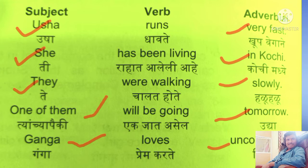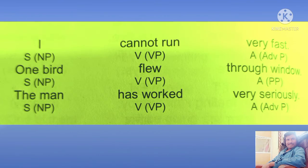Adverbial is the part of the sentence that gives additional information about the verb. In 'I cannot run fast,' I is the subject, cannot run is the verb phrase, and very fast is an adverb phrase functioning as the adjunct or adverbial. In 'One bird flew through the window,' one bird is the subject, flew is the verb phrase, and through the window is a prepositional phrase functioning as the adverbial. In 'The man has worked very seriously,' the man is the subject, has worked is the verb phrase, and very seriously is an adverb phrase functioning as the adjunct.